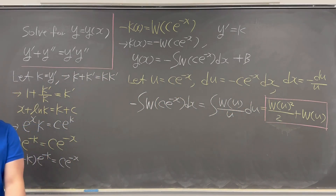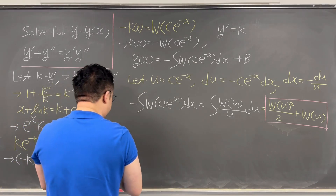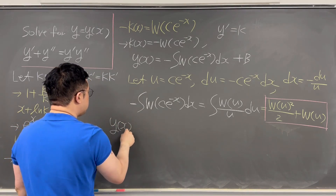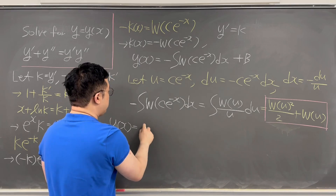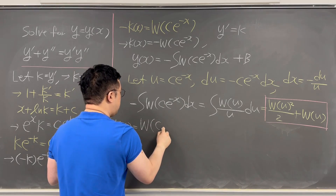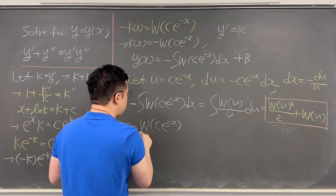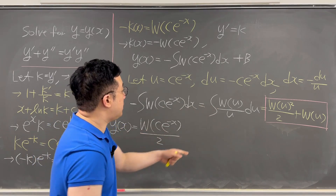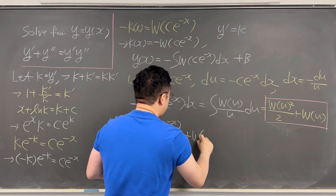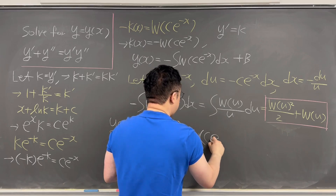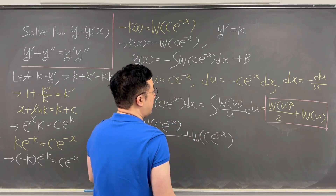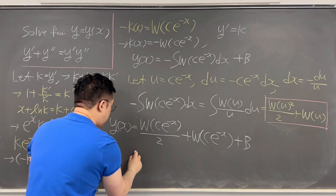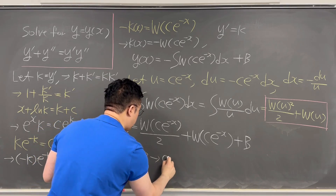So we can finally represent y(x) using the Lambert W function: y(x) = W(c · e^(−x))²/2 + W(c · e^(−x)) + b, where c and b are constants.